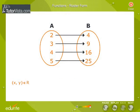The elements 4, 9, 16 and 25 are called the images of 2, 3, 4 and 5. The elements 2, 3, 4 and 5 are called the pre-images of 4, 9, 16 and 25.